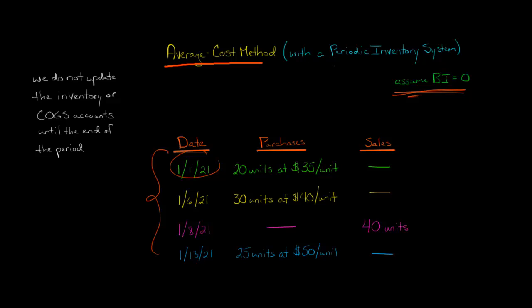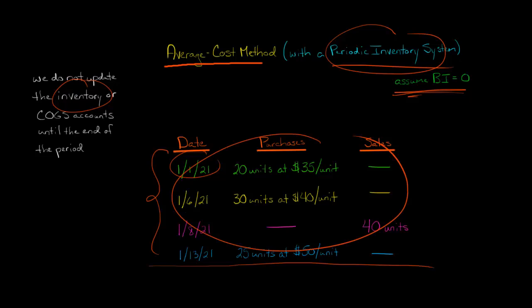So because the company has a periodic inventory system, whenever it's making these purchases, it's going to debit a purchases account. It's not going to debit inventory. And similarly, when the company sells these 40 units, it's not going to debit cost of goods sold and credit inventory. With a periodic inventory system, you only make the debit to cost of goods sold at the end of the period. So let's say this is the end of the period here, January 15th or something. So these are all the transactions for the period.